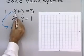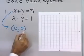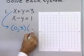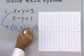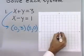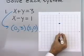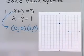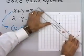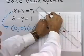Let's let x be equal to 0. When we do that, y is equal to 3. And let's let y be equal to 0 — when we do that, we see x is equal to 3. So x is 0, y is 3, and x is 3, y is 0. I'll draw a line between those two points, and that is the graph of my first equation.